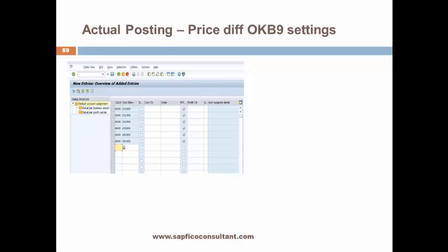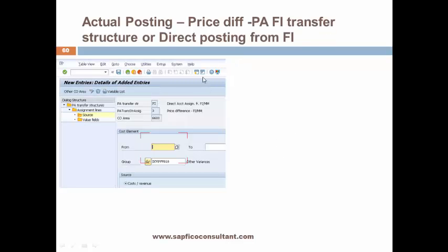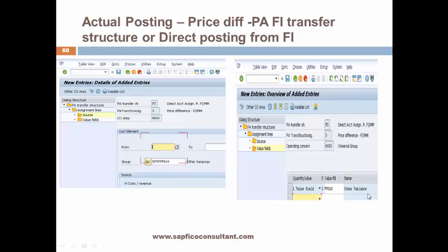For price difference settings, all price differences coming in from the MM module need to be assigned to an OKB9 setting. All of these GL codes are assigned to OKB9 and we switch on the profitability segment tick, so the profitability segment is automatically derived based on available characteristics. We then assign this price difference account to the PAFI transfer structure. This is also applicable for direct posting from FI. The price difference accounts are captured in a group called 'other variances' in the cost element group and assigned to a value field called 'other variance'.